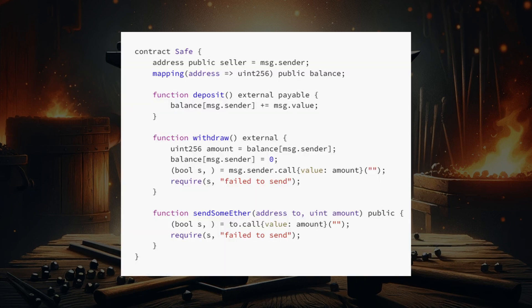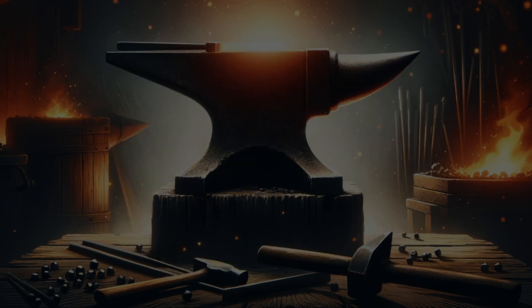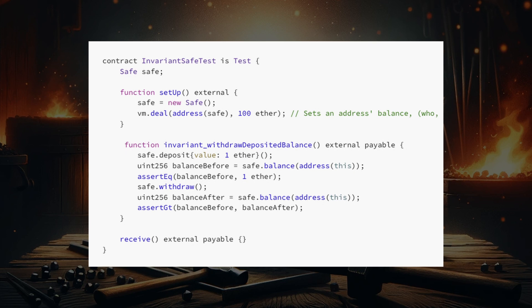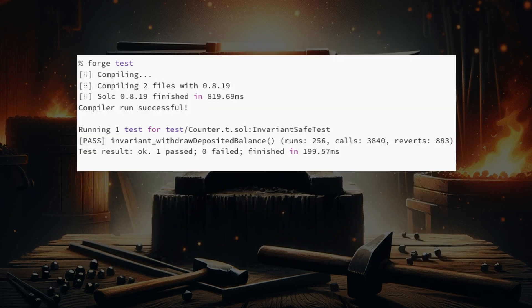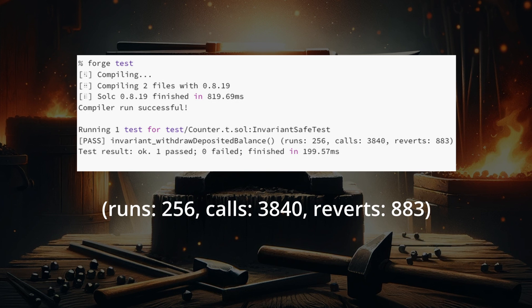Let's see this in action by modifying the contract we used before. Here we have modified the withdraw function and added the ability to deposit ether. The important invariant we want to test is that the amount withdrawn must always equal the amount deposited. With the invariant safe test contract, running the test gives the following output — it passes. But always read the output carefully: it shows runs, calls, and reverts. In this case, it is reverting a total of 883 times. Why didn't it fail? It is an expected result.